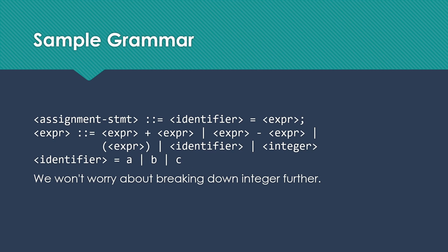Let's start with a sample grammar — a very simplified grammar for an assignment statement. An assignment statement turns into an identifier, the equal sign, an expression, and a semicolon, typical of Java, C, and C++. For expression, we have five options: expression plus expression, expression minus expression, an expression in parentheses, an identifier, or an integer. Identifiers are limited to A, B, or C, and we won't break down integer further.